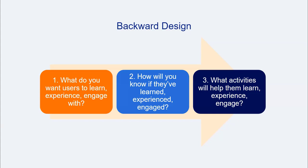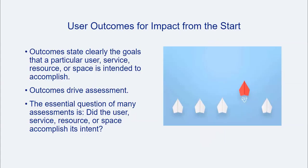Second, how will we know if they've in fact learned, engaged, or experienced the things that we hoped they would? And third, what activities will help them learn, experience, or engage? For our purposes here, we want to focus on those first two questions. What do we want users to gain from library engagement with our services, resources, spaces, and so on? That gives us our outcome. The second question of how we'll know if they've had that experience points us toward an assessment approach. What is the outcome we want users to come away with? By focusing on outcomes, we prioritize users from the start of an assessment project. When we clearly articulate an outcome, we clearly state the goals that we want user engagement with the library service, resource, or space to accomplish. This clear statement of benefit serves as a focus for the assessment.